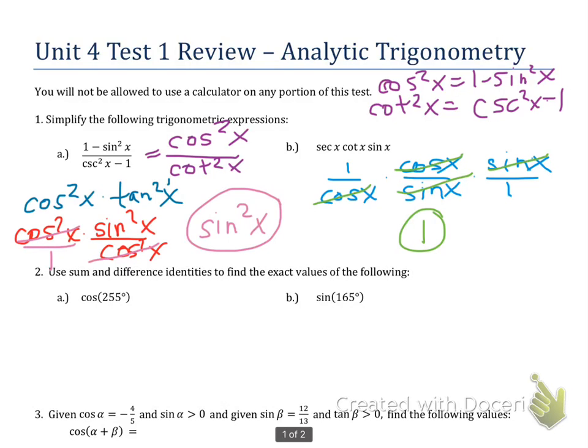Now let's look at problem number 2. We're going to use the sum and difference identities to find the exact values. So the first thing we want to do in these problems is to find two angles on the unit circle that will combine together to give us the angle measurement inside our parentheses. There's lots of pairs we can use. You can either add or subtract to get that number.